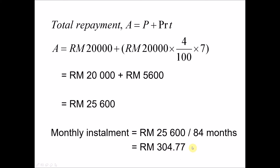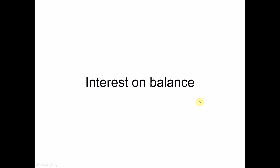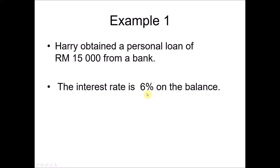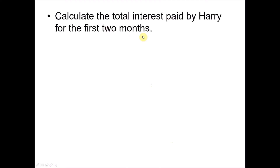Now we look at the second type of interest calculation: interest on balance. In Example 3, Harry obtains a personal loan of fifteen thousand ringgit from a bank. The interest rate is six percent on the balance — meaning it is not a flat interest rate. The repayment period is ten years, and the monthly installment has already been calculated as one hundred and seventy ringgit per month. The question asks us to calculate the total interest paid for the first two months.